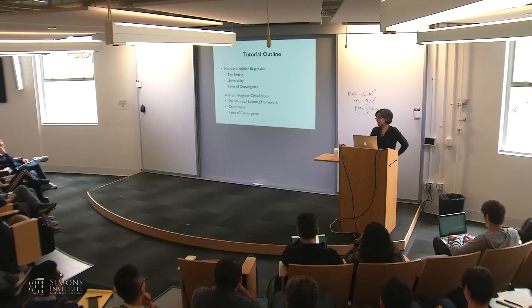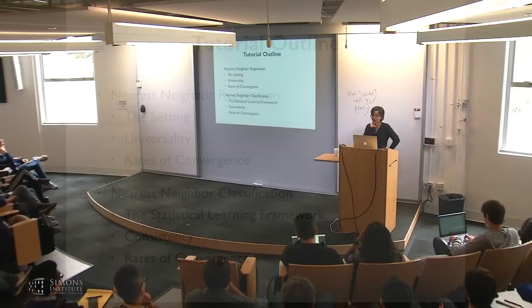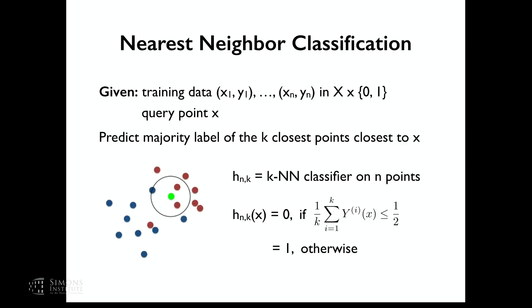That's more or less it for nearest neighbor regression. Now let's look at nearest neighbor classification. For classification, we use h_n,k to denote the k-nearest neighbor classifier on n points. Given an x, you look at the labels of the k points around x, and you predict the majority of the labels — if the average is less than half you predict 0, more than half you predict 1.